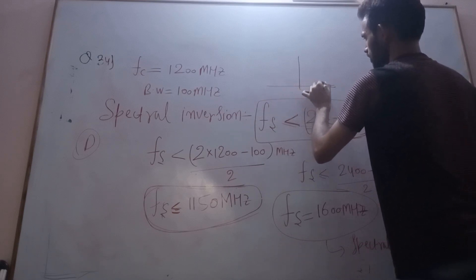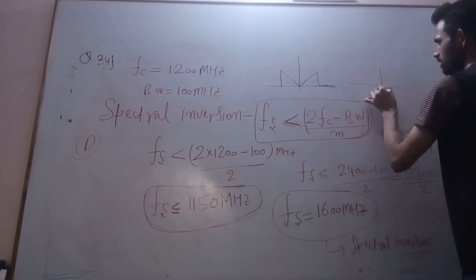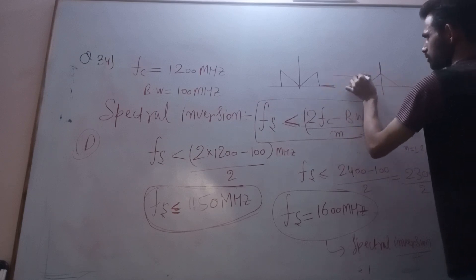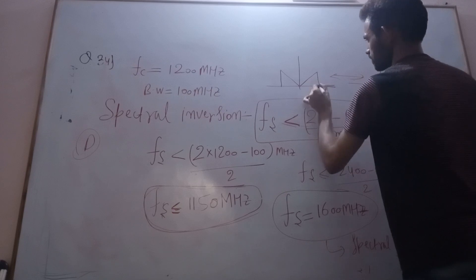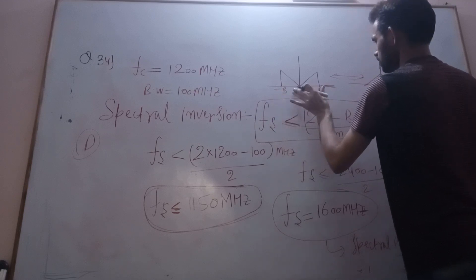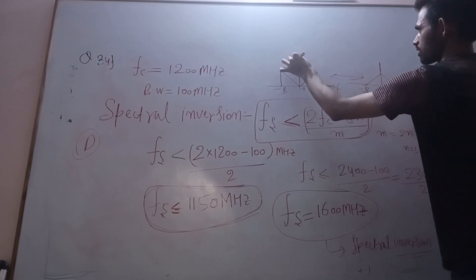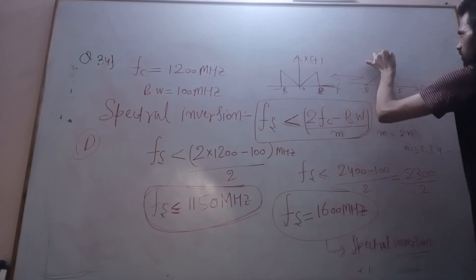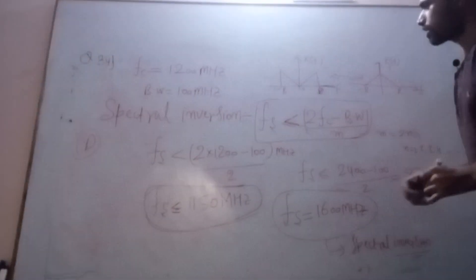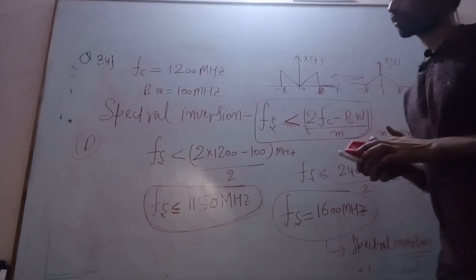To visualize spectral inversion: if my signal looks like this, after spectral inversion it becomes flipped — the spectrum gets inverted. This is spectral inversion, and we can avoid it by satisfying the condition fs ≤ 2fc minus bandwidth divided by m. Keep this condition in mind. That's all about question number 34.